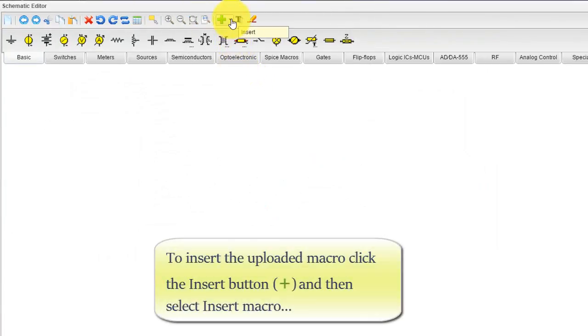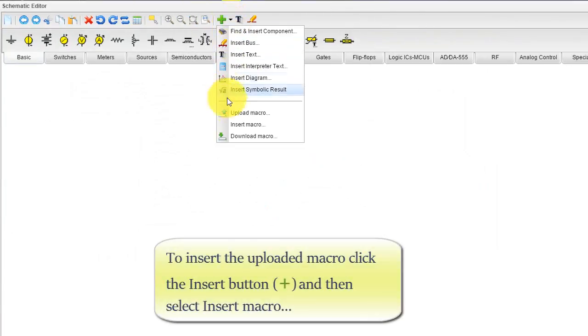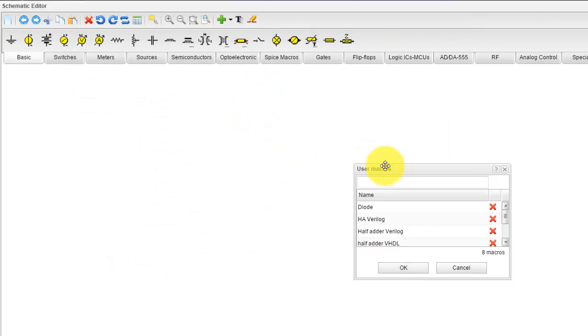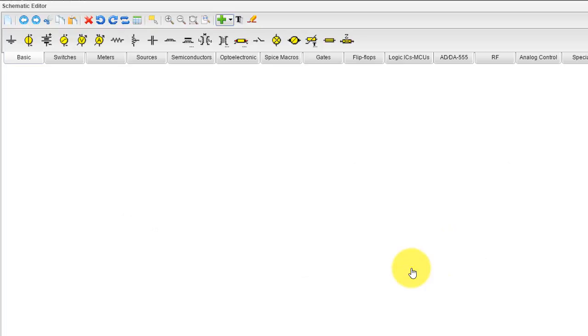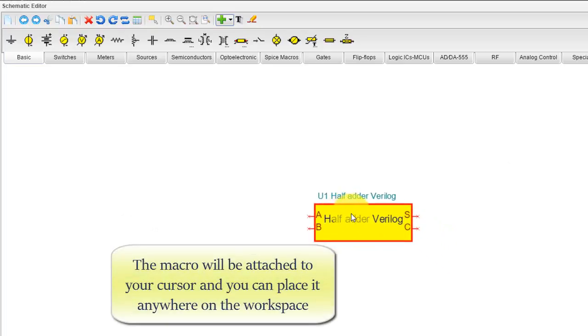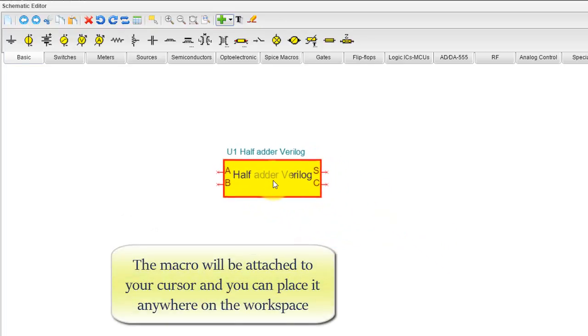To insert the uploaded macro, click the Insert button and then select Insert Macro. From the User Macros window, select HalfAdderVerilog. Then click OK. The macro will be attached to your cursor and you can place it anywhere on the workspace.